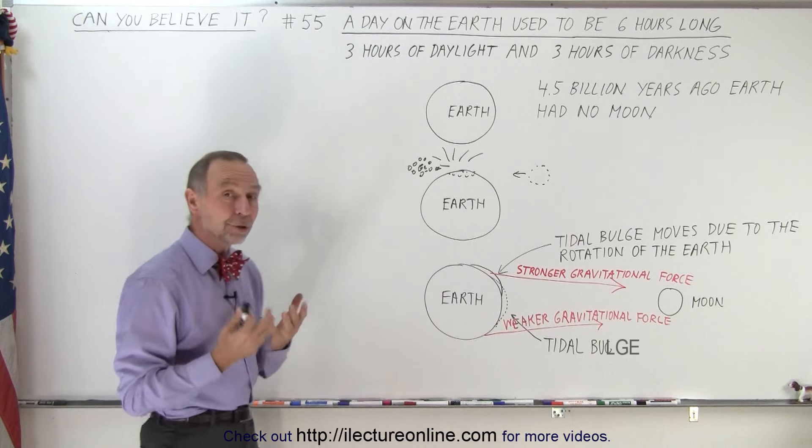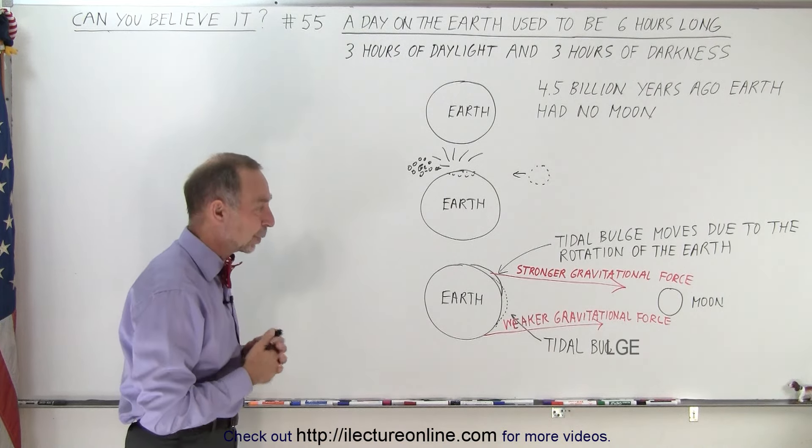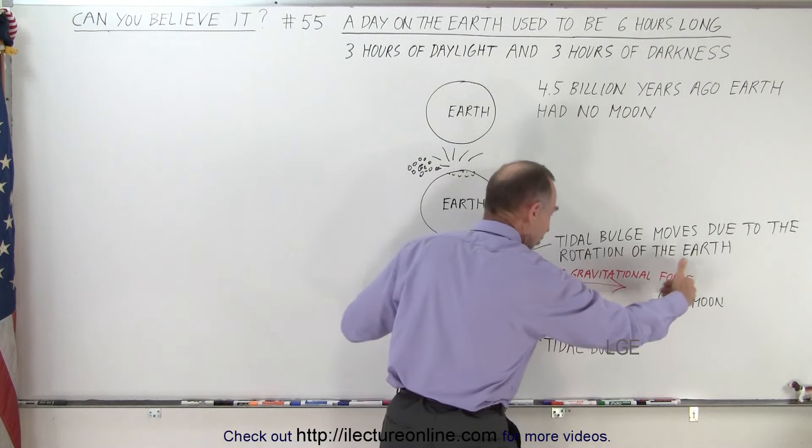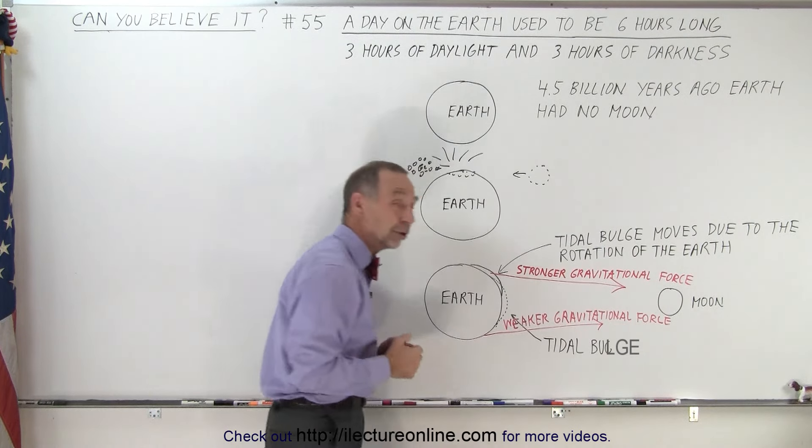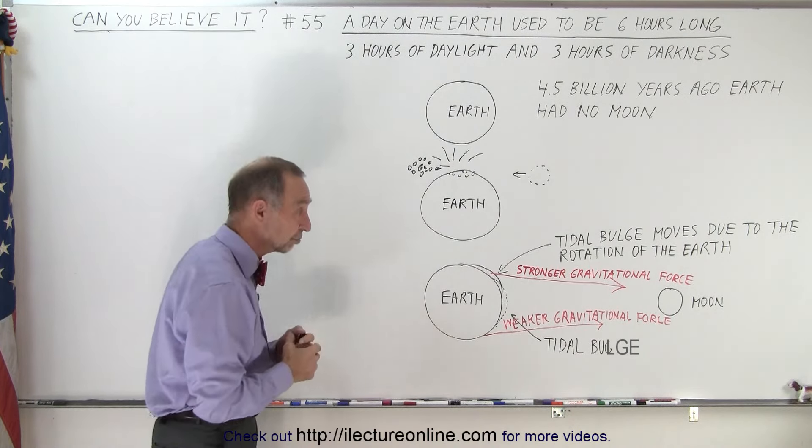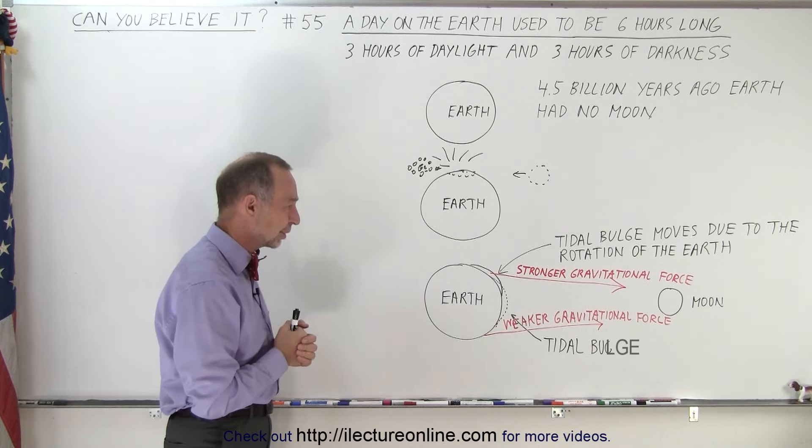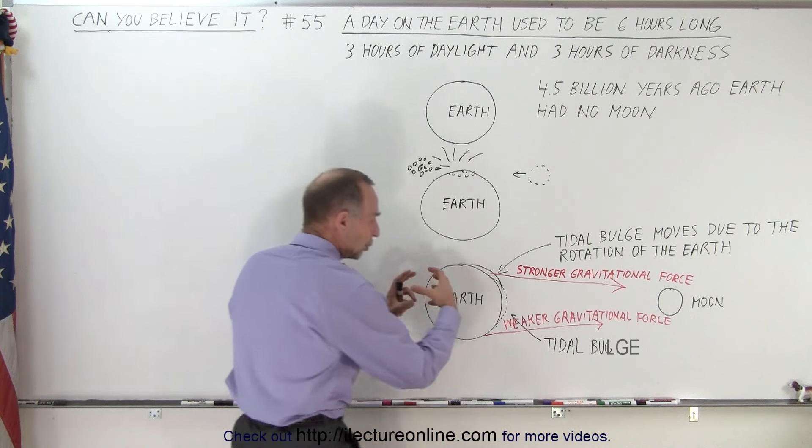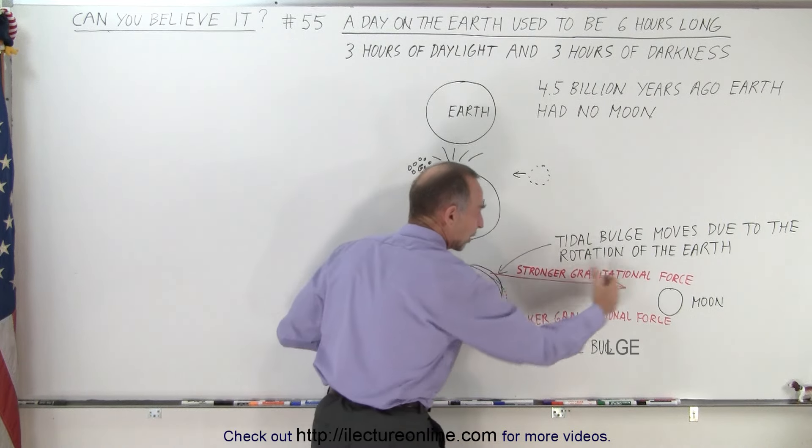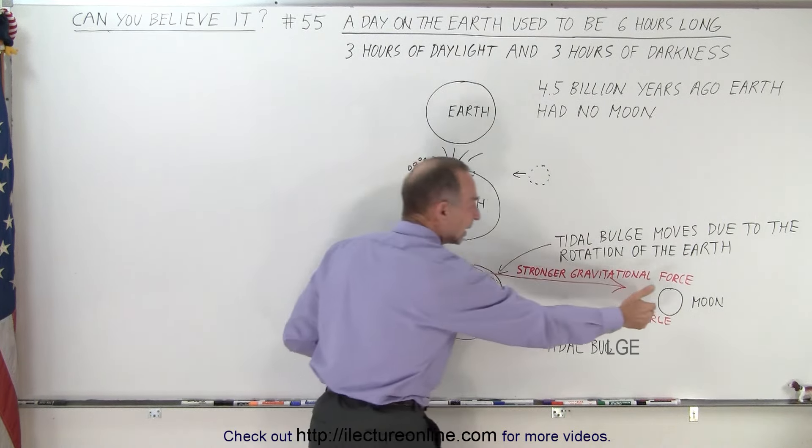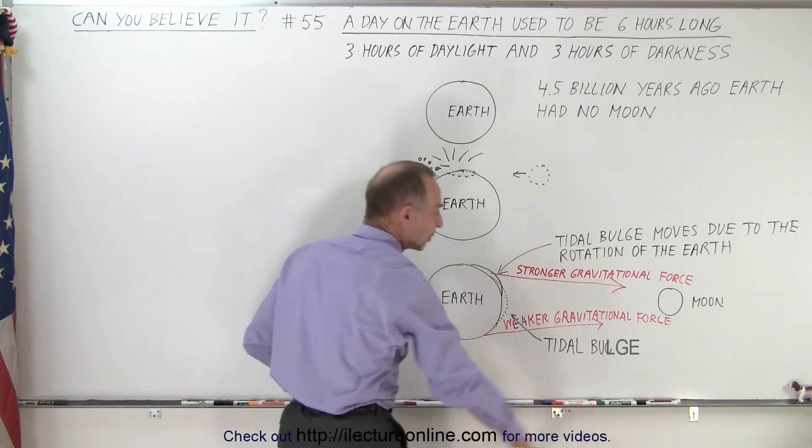So what happened? Why did the earth's rotation slow down? It turns out that there's a very strong gravitational attraction between the moon and the earth, because the moon is relatively close, at about 385,000 kilometers, which is about 230,000 miles away from the earth. And because of that, the earth gets stretched in the direction where the moon is at.